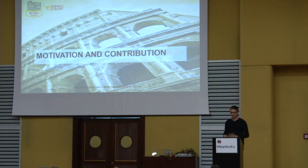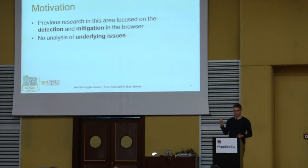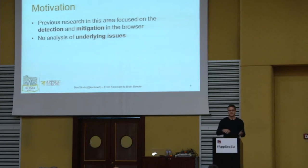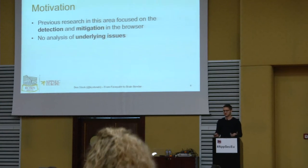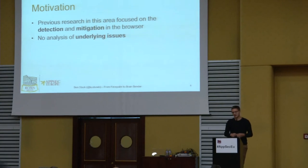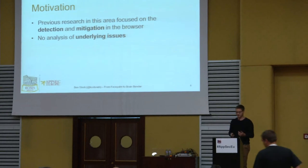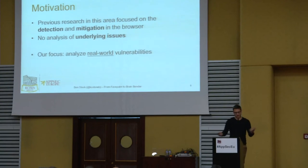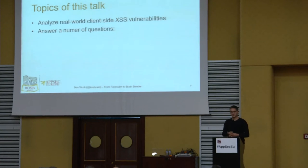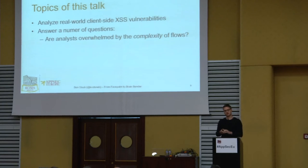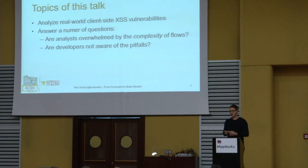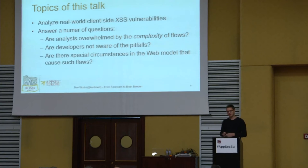This brings me to my motivation. Previous research has focused on detection and mitigation of vulnerabilities — finding them and filtering against them — but there has never been any analysis of the underlying issues. Why do developers actually make these mistakes? Where do these vulnerabilities originate? Rather than using toy examples, we wanted to find real-world vulnerabilities and analyze them. The key questions are: are analysts overwhelmed by complexity of data flows, are developers unaware of pitfalls, and are there special circumstances in the web's programming model that differ from other application domains like Android apps?